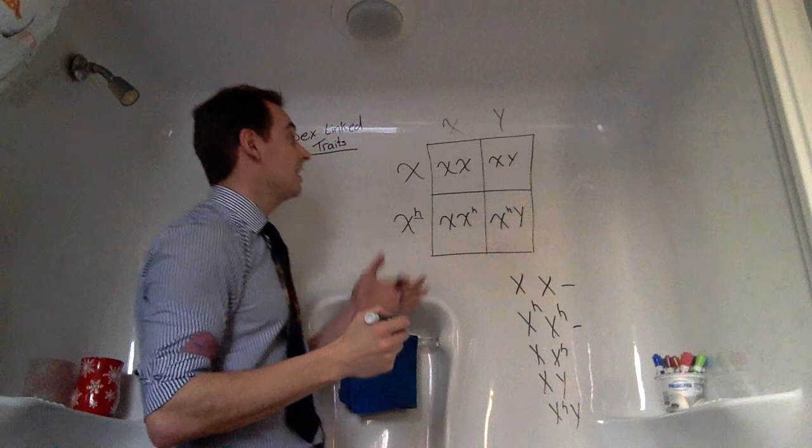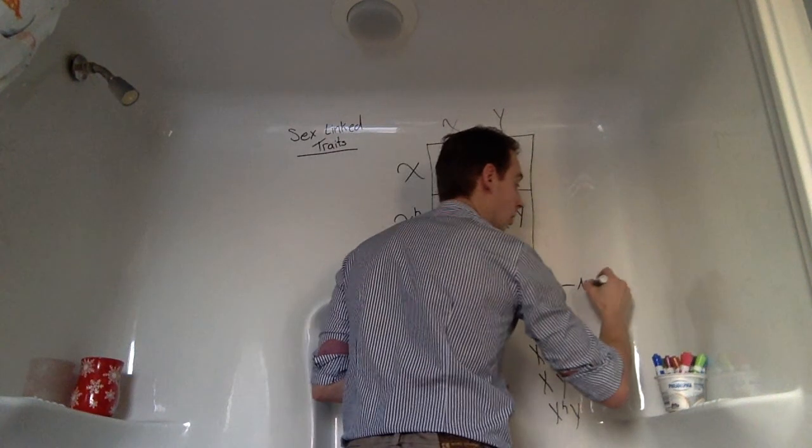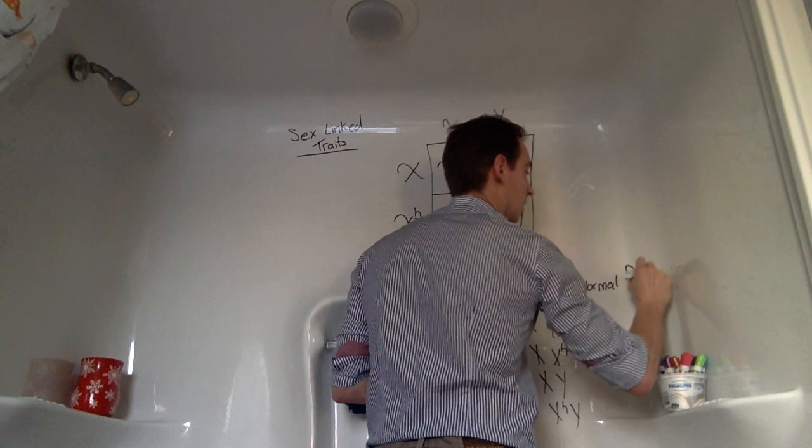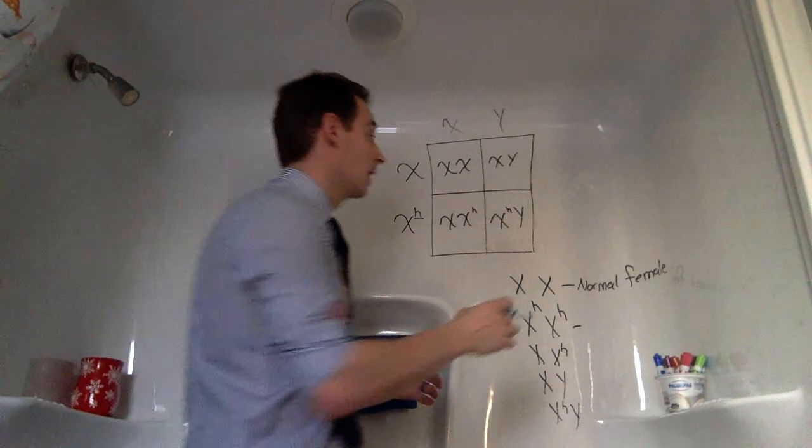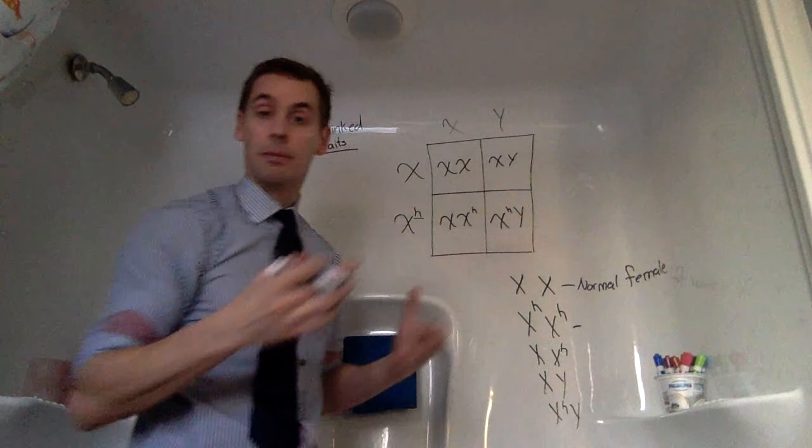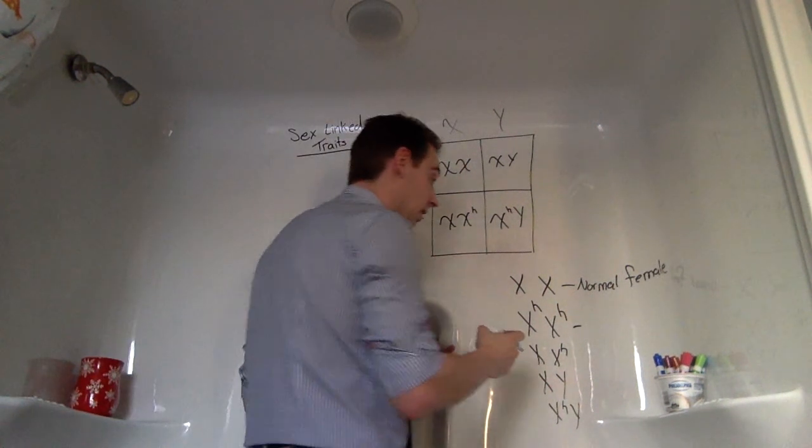So our phenotype is if we end up with an XX individual, we have what we called a normal female. So they don't carry the trait at all. There's nothing unique about it. So there's no possibility of them having it.